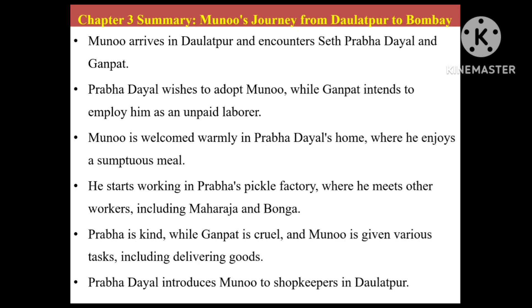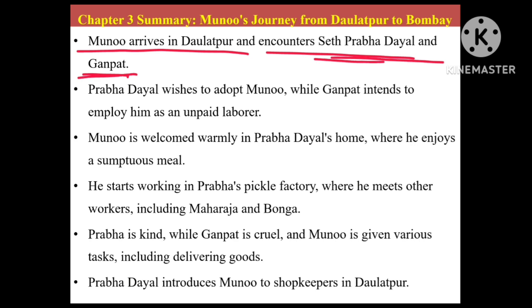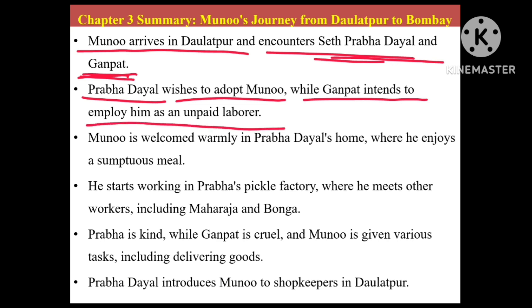Munnu arrives at Daulatpur and encounters Seth Prabhadayal and Ganpat. Chapter one was at the village, next was at Shamnagar, and now we are at Daulatpur. In Daulatpur he meets these two people who are business partners. Prabhadayal wishes to adopt Munnu while Ganpat intends to employ him as an unpaid laborer. Prabhadayal was a very good man who wanted to adopt Munnu because God had given him everything — money and property. But Ganpat was not in favor of this; he wanted free labor in the form of Munnu. By this we can understand our society is divided — there are some good people and bad people as well.